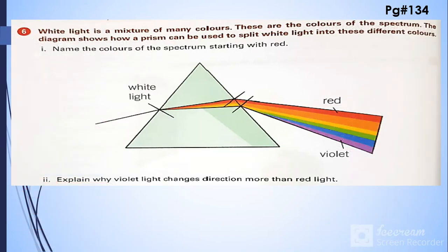Come towards the last question. White light is a mixture of many colors, these colors of the spectrum. The diagram shows how a prism can be used to split white light into these different colors. Now name the colors of the spectrum starting with red. So the colors are red, orange...